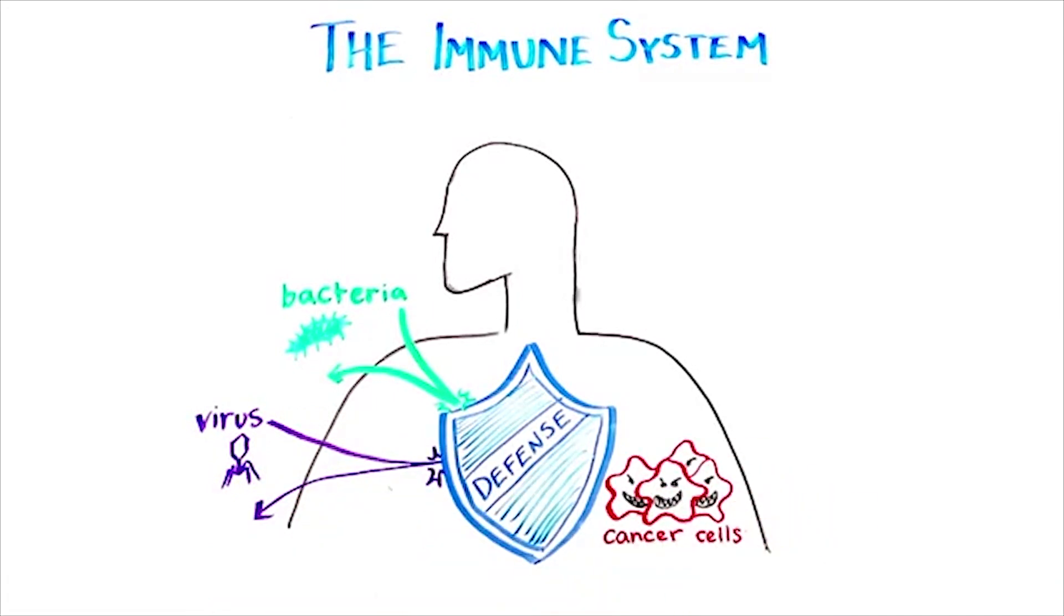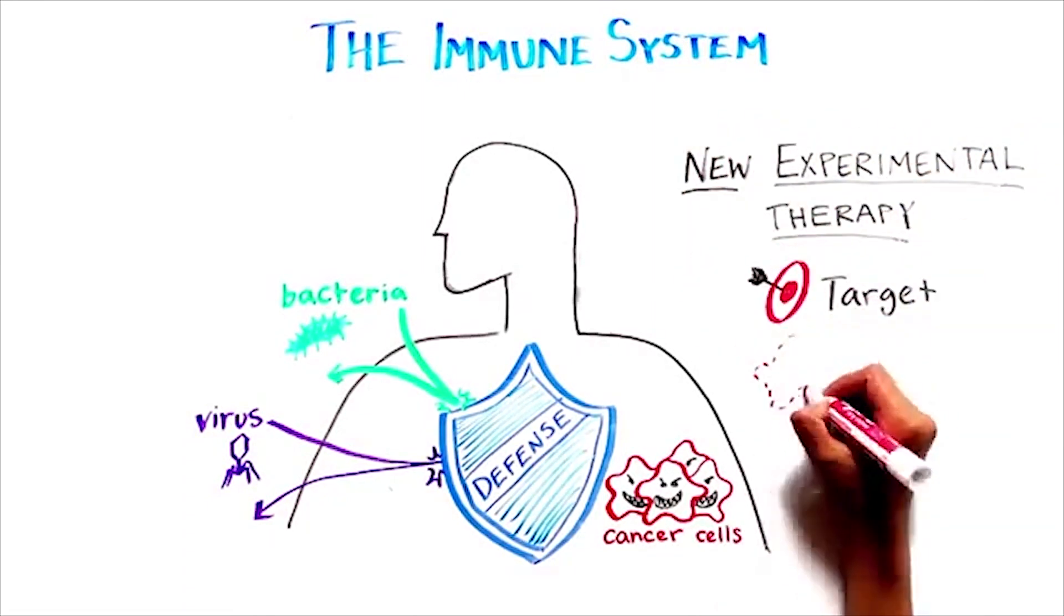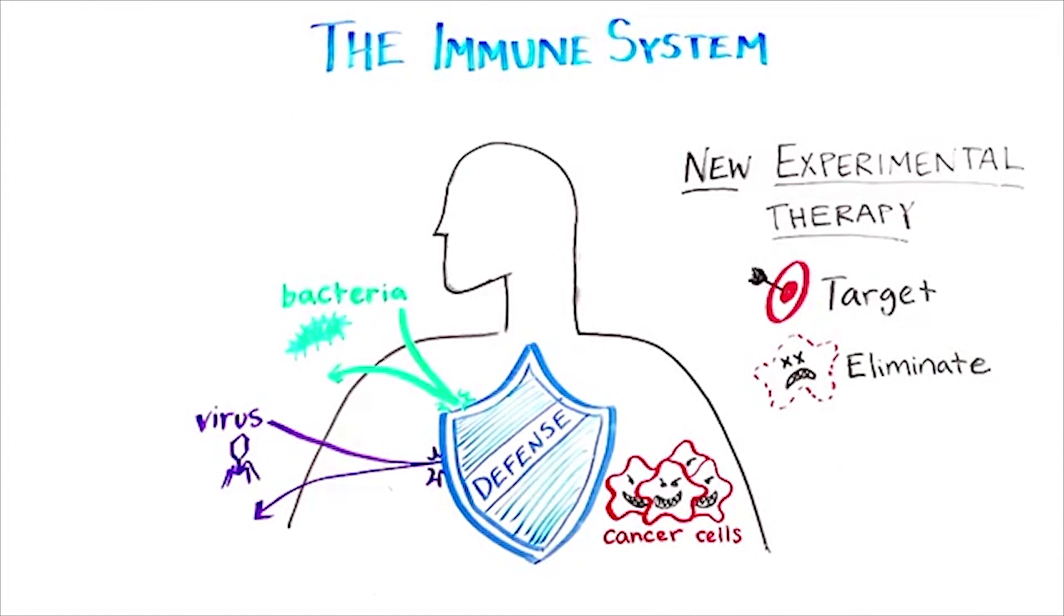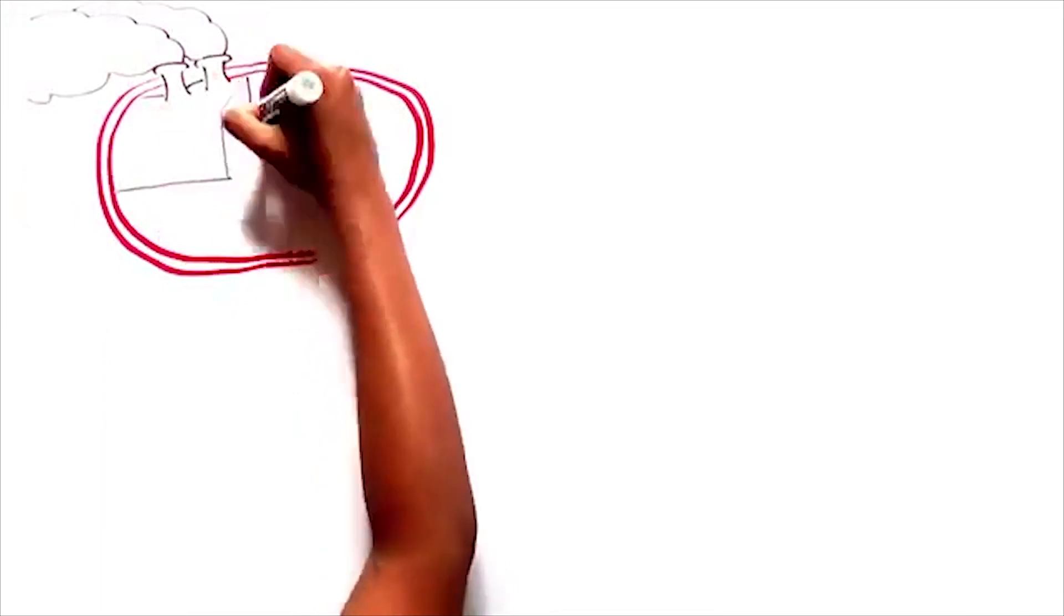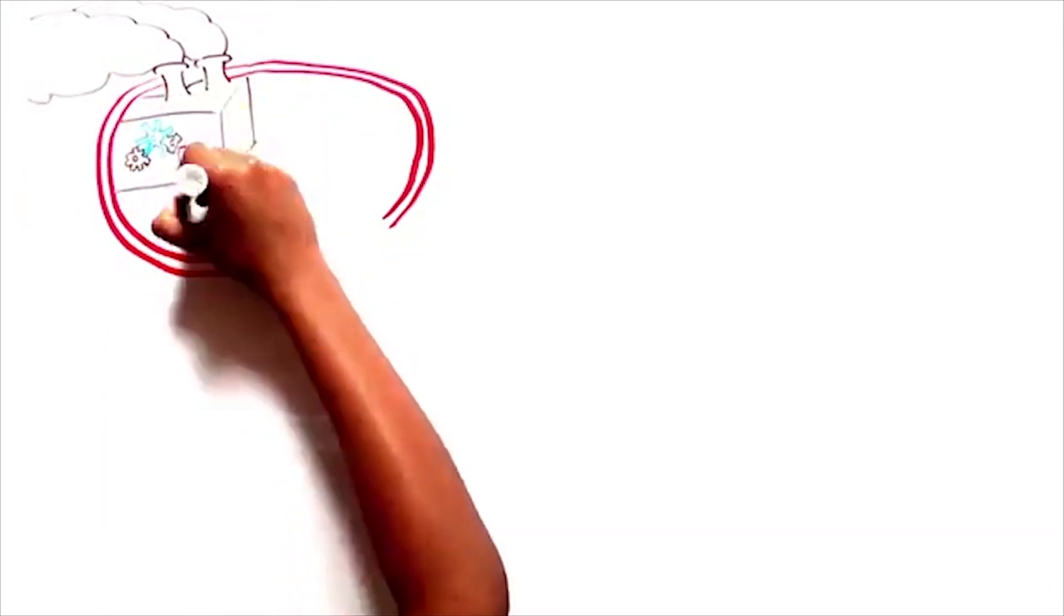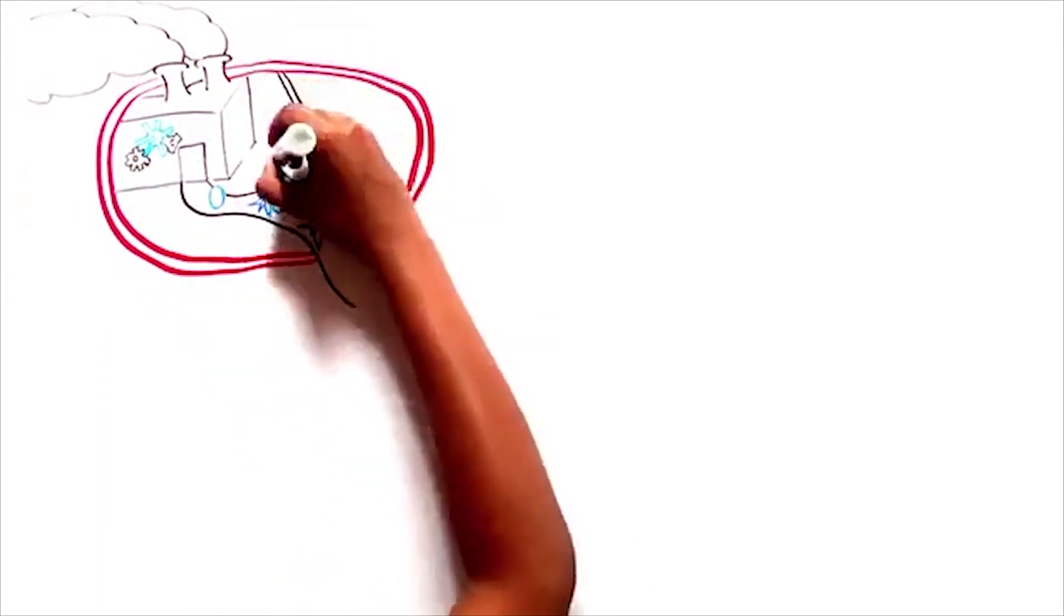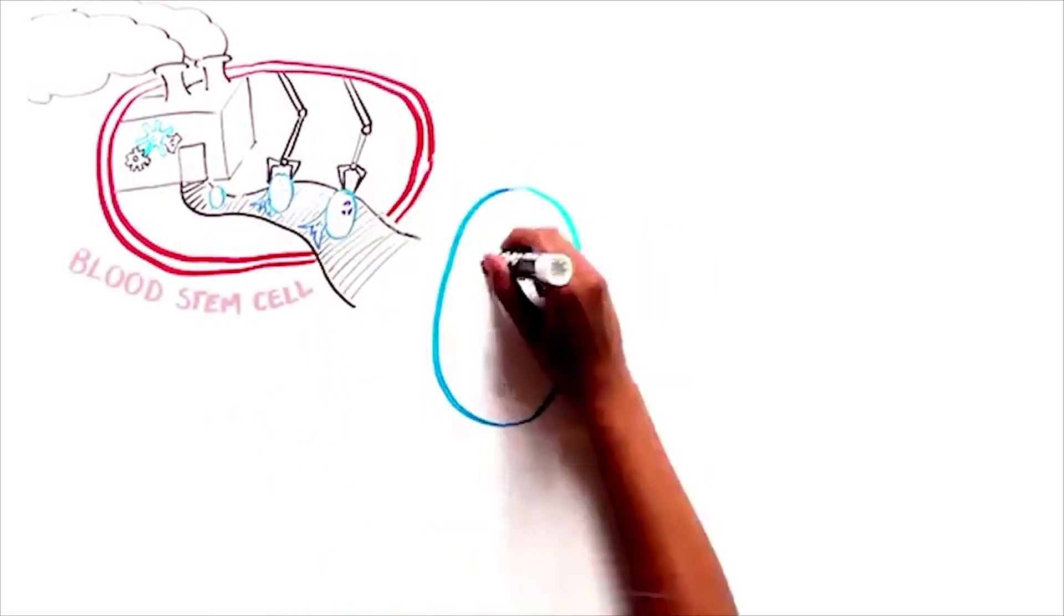Here we will tell you about a new experimental therapy that aims to strengthen the immune system's ability to target and eliminate cancer cells. Immune cells come from a special type of stem cell called a blood stem cell. These cells act like a factory that continuously produces immune cells.